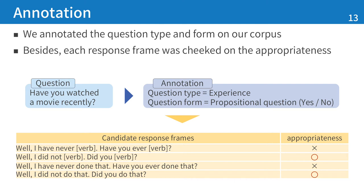For example, the question 'Have you watched a movie recently?' has question type 'experience' and question form 'yes-no question.' Experience and yes-no question has four candidate response frames. But, for example, the third one is not appropriate because the question is asking about recent experience, but the third frame says 'never.' In this way, we annotated the corpus.